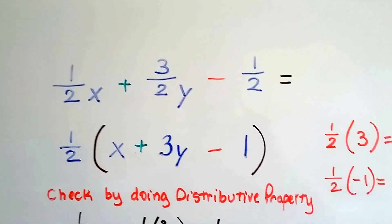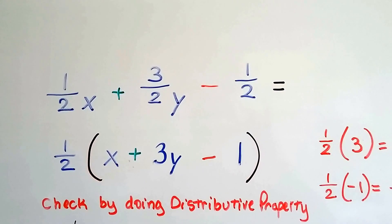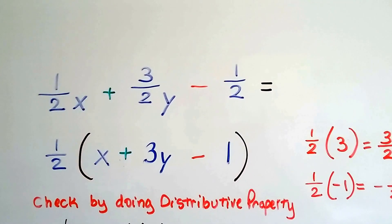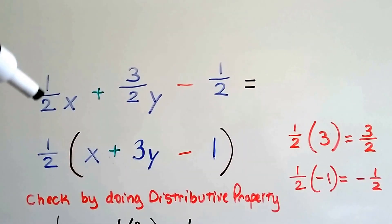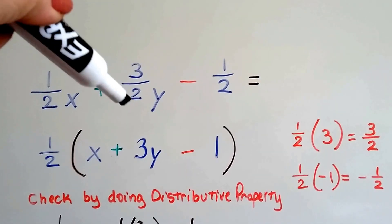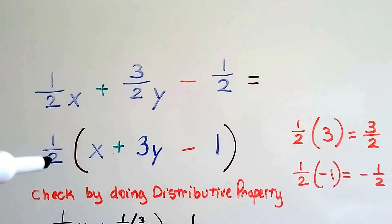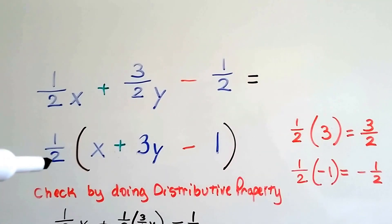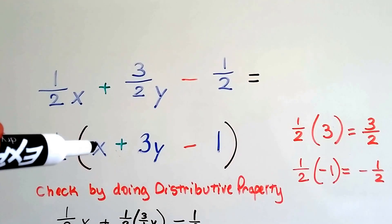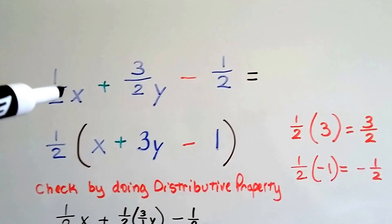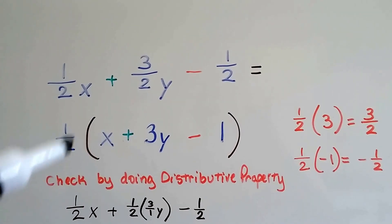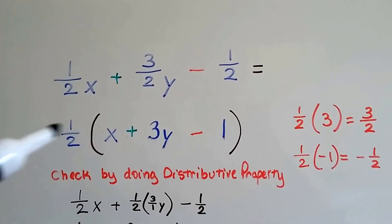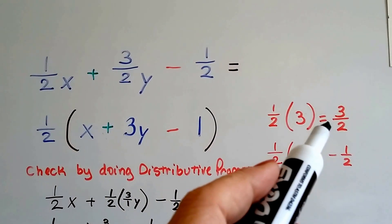Let's try it with a fraction and some variables. We've got a half x plus three halves y minus a half. What number is a factor of all three of these coefficients and numbers? A half can go into three halves and it can go into a half. We've got our x here, so we put the x here and the half on the outside. Half times x is half x, and half times three y is going to get us the three halves, because three times a half is three halves.